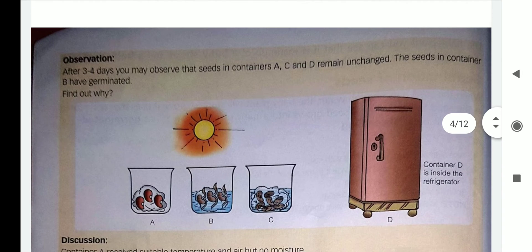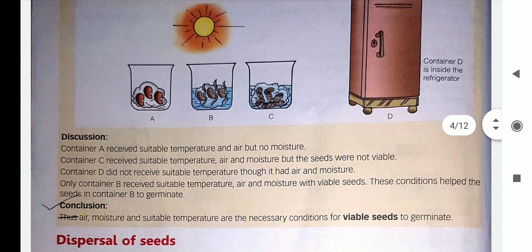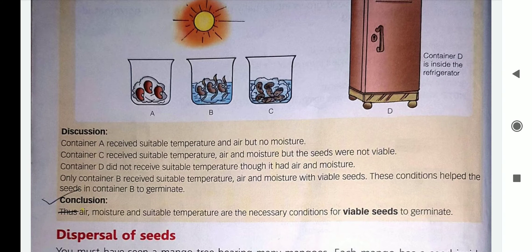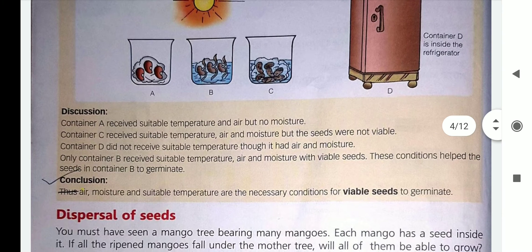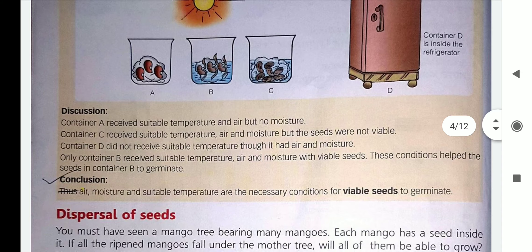There are a few conditions which are necessary for germination of a seed. Children, just as we need water, air, and food to live a healthy life, similarly seeds also need enough water, right temperature, air, moisture, proper sunlight, fertile soil, and enough space to grow into a healthy plant.